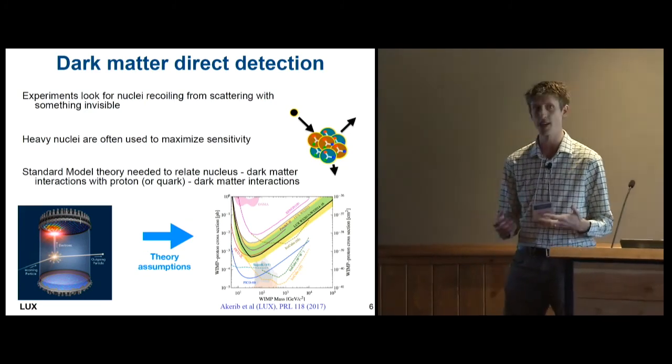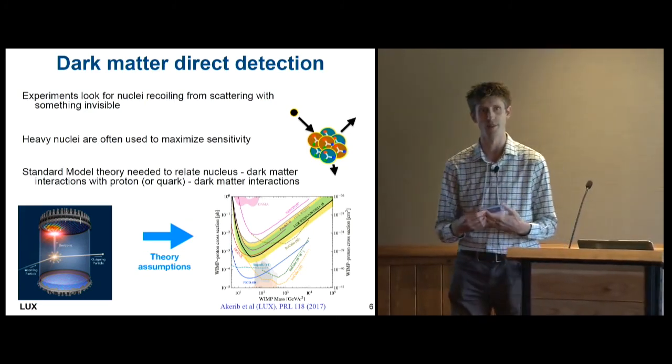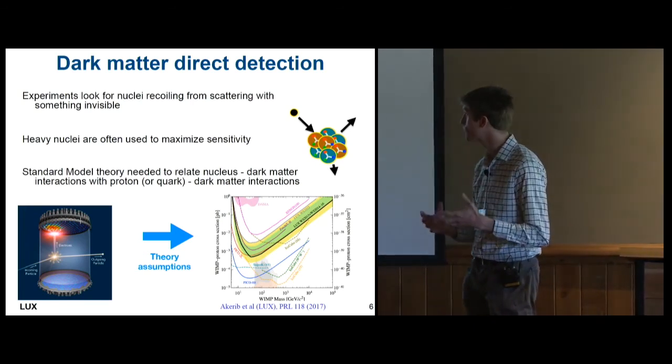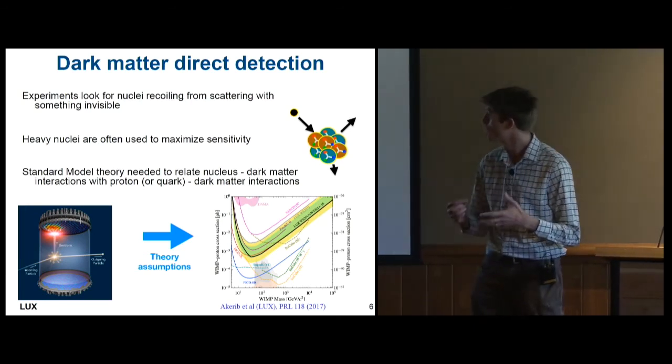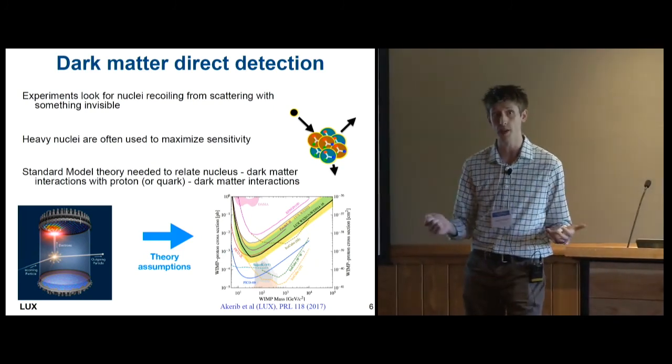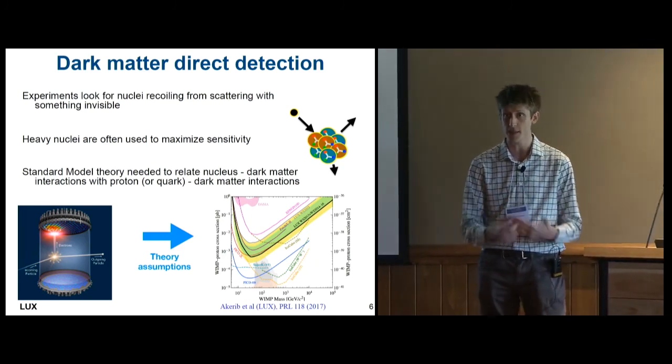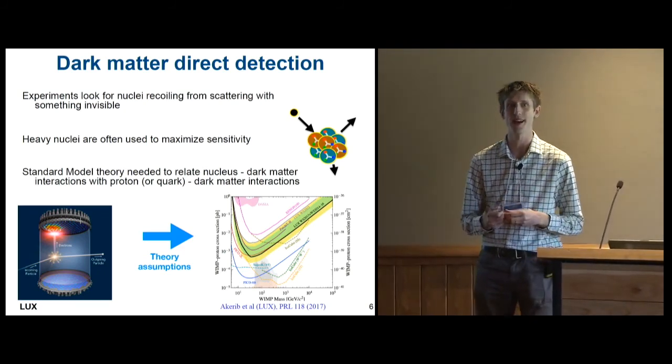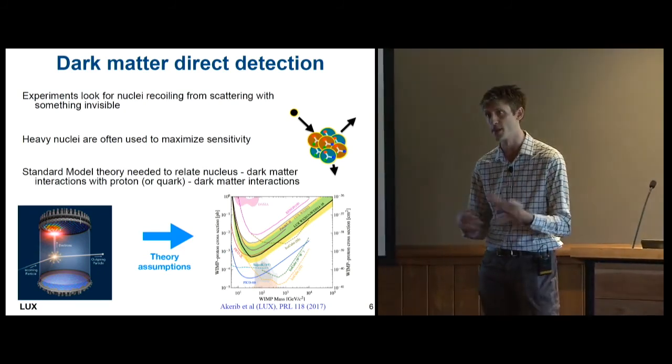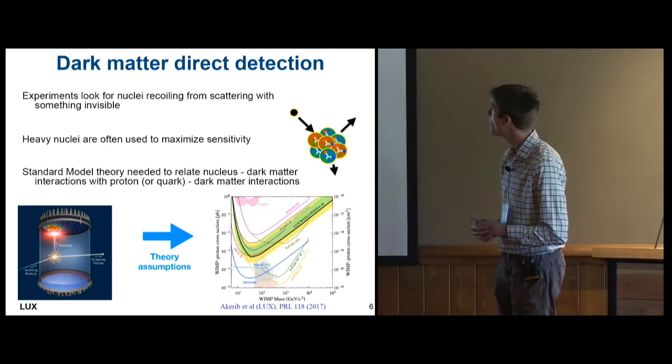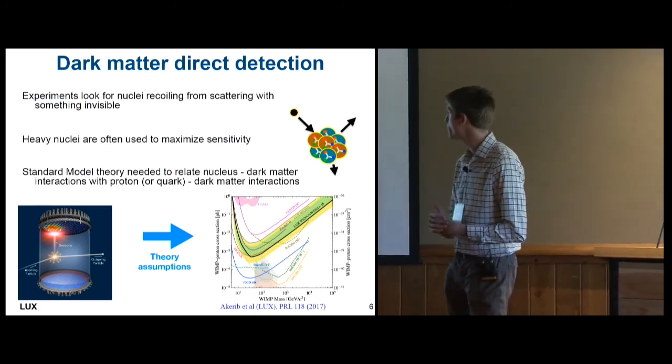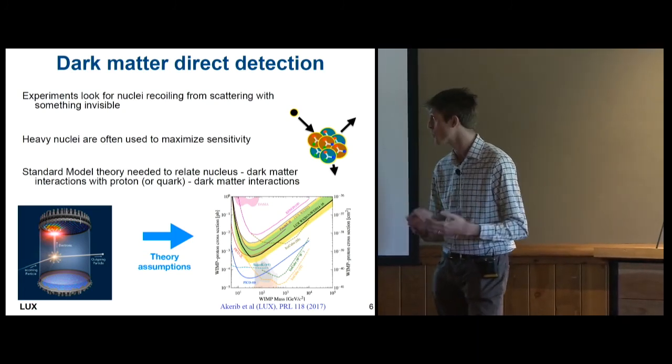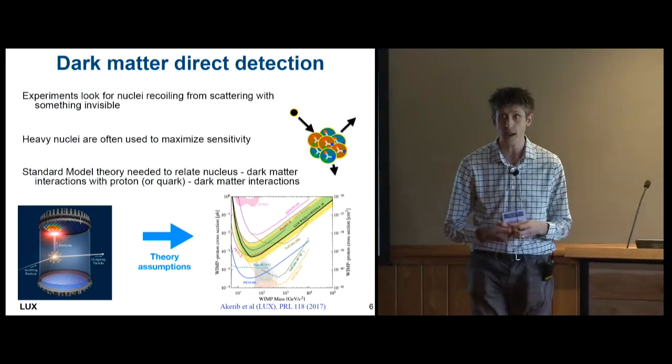And direct detection experiments are the most direct way of trying to get at this, where you take a large underground volume detector and you look for nuclei recoiling from a collision with something invisible inside of the detector. And if it's something invisible, that's our dark matter, as long as it's not a neutrino or some other backgrounds that you have to worry about. But by and large, experiments so far with these direct detection experiments have come up null. We have no direct detections of dark matter.